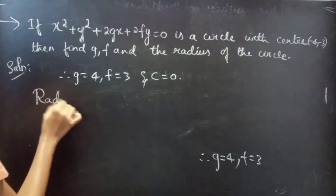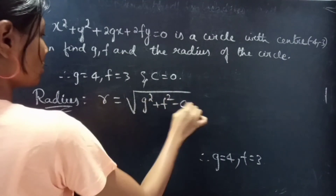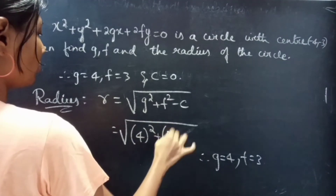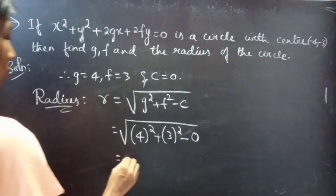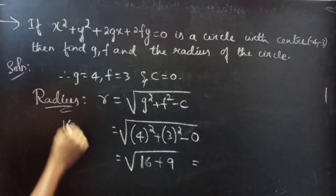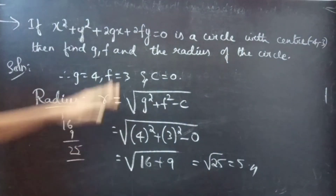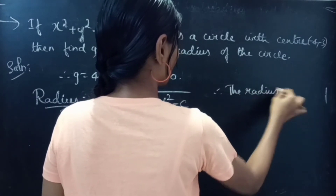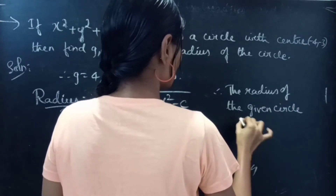Now we will find the radius using the formula. We will substitute the values of g, f, and c. We get: square root of 4 squared plus 3 squared minus 0, which equals square root of 16 plus 9, which equals square root of 25, which equals 5. Therefore, the radius of the given circle is 5.